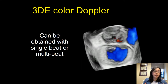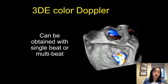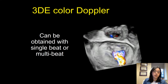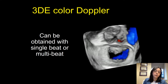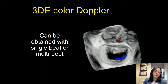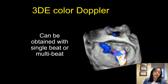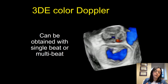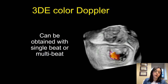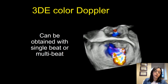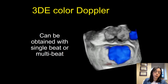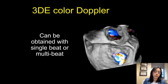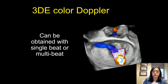Everything described for non-color 3D data sets also applies to color 3D data sets. Although there has been progress in this area, with 3D color data sets you still have a drop in volume rate, so sometimes you may need to use a smaller pyramid when adding color or go to multi-beat acquisition.